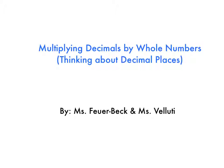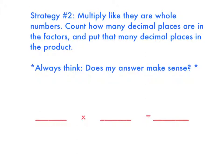Today we'll be learning how to multiply decimals by whole numbers using the strategy Thinking About Decimal Places. With this strategy, you multiply like they are whole numbers. Then you count how many decimal places are in the factors and put that many decimal places in the product.